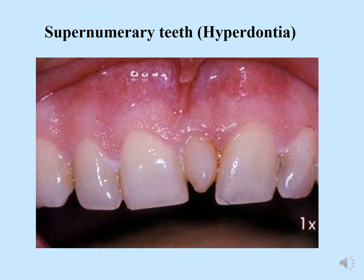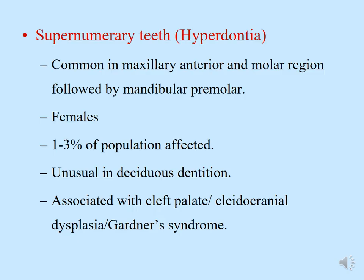Moving on, supernumerary teeth — the term means more teeth or hyperdontia. In this picture there is an extra tooth present between the central incisors, one of the most common supernumerary teeth seen. It is common in the maxillary anterior and molar region, followed by mandibular premolars. Again common in females; one to three percent of the population is affected. Supernumerary teeth is very unusual in deciduous dentition and is usually associated with cleft palate, cleidocranial dysplasia, or Gardner's syndrome.